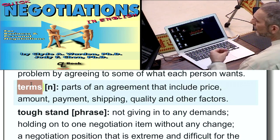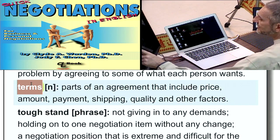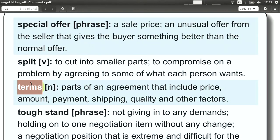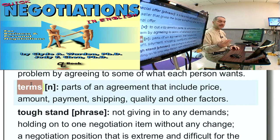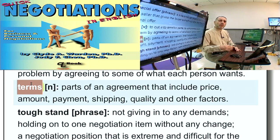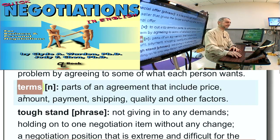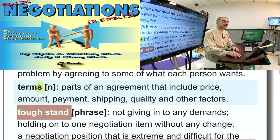Terms — the terms of the agreement are all of the details of the negotiation: what is the price, what's the quantity, the shipping, and all of these kinds of things. Those are called terms. You use this in your negotiation by coming right out and saying these are our terms, or you can ask the other side what are your terms? We agree with your terms, or we cannot agree with your terms at this time.